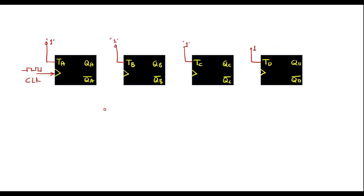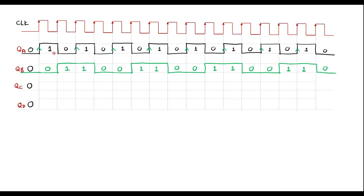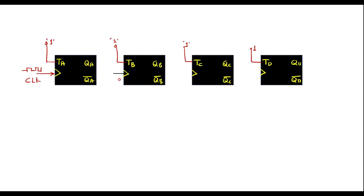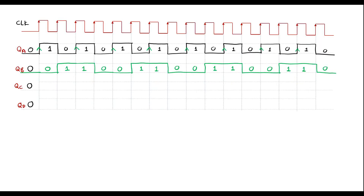In an asynchronous counter, the output of the first flip-flop acts as the clock input for the next flip-flop. So we have to decide whether QA or QA-bar should be connected to the clock input of the second flip-flop. From the waveform we observe that QB changes from 0 to 1 when QA moves from 1 to 0. Since we are using positive edge triggered flip-flops, we must connect QA-bar to the clock input of the second flip-flop, so that the falling edge of QA appears as a positive edge for TB.